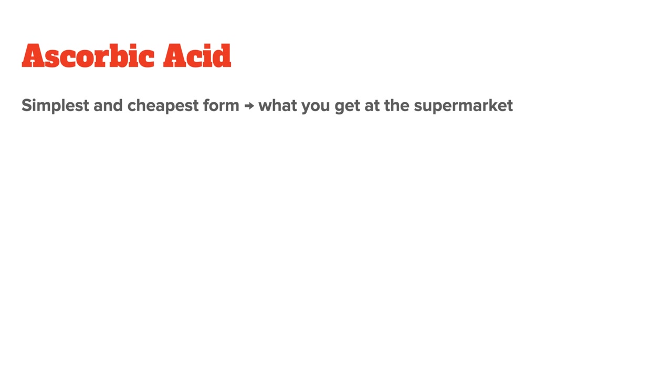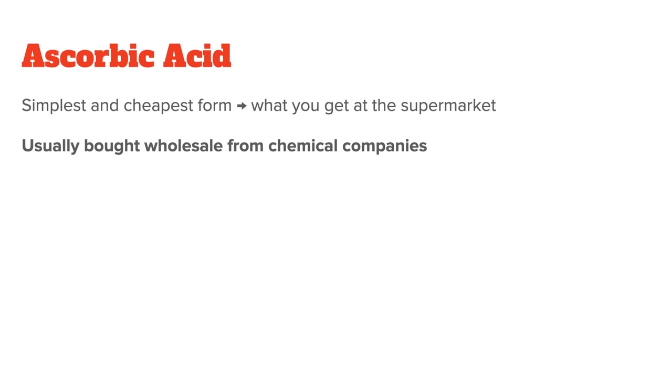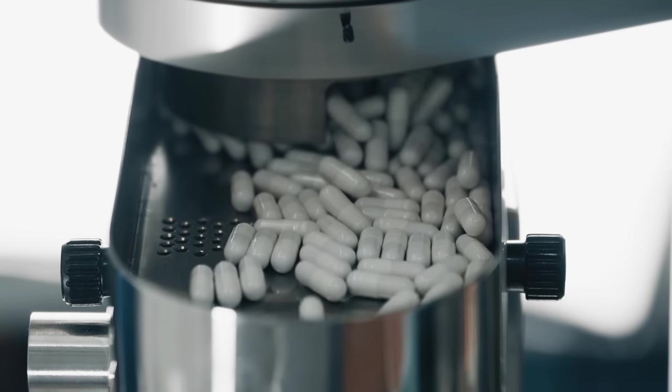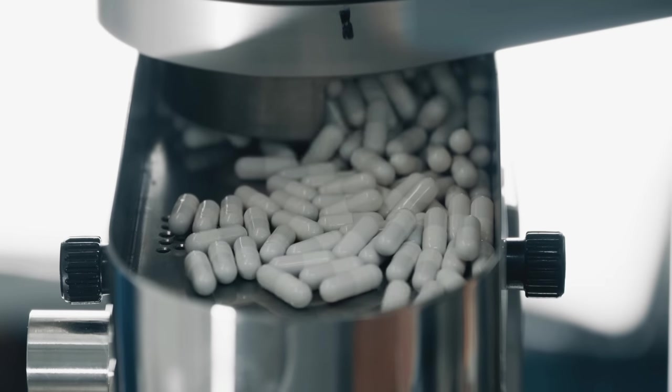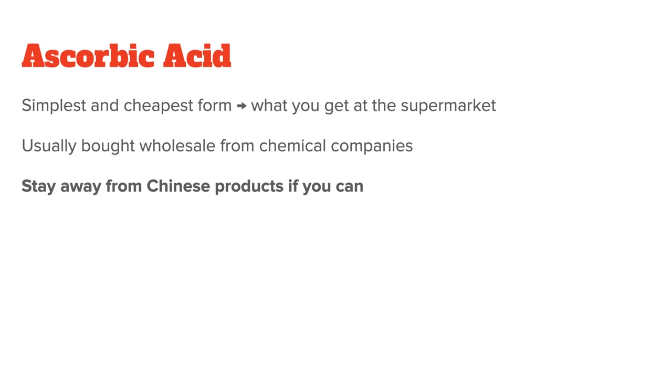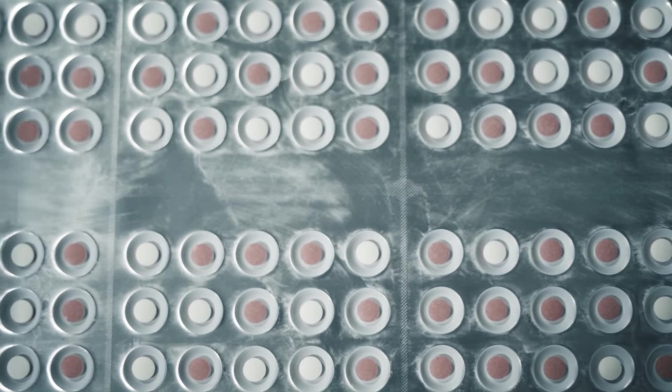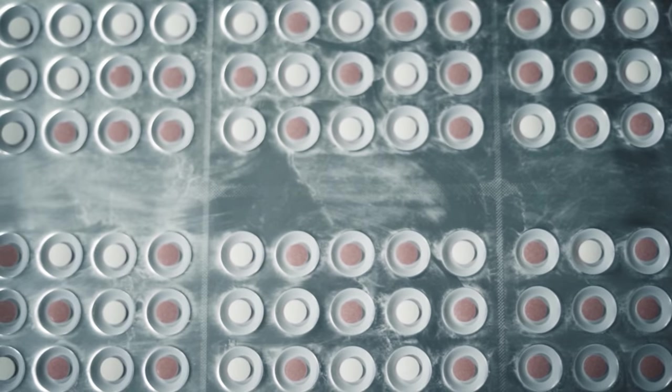Ascorbic acid is the simplest and cheapest form of the three. It's what you get when you buy vitamin C at the supermarket. Now, most supplement brands don't make their own ascorbic acid. So, it's usually powder that they buy wholesale from chemical companies like BASF or Roche or from producers in China. And then they just bottle it up or encapsulate it in their own facility. If you can, I would stay away from Chinese products because they're the most unreliable ones.